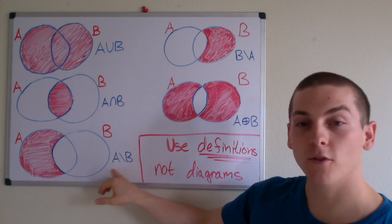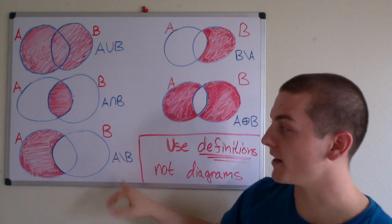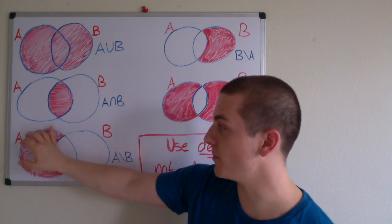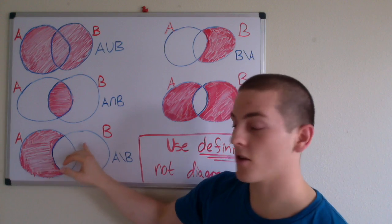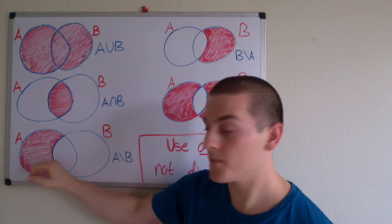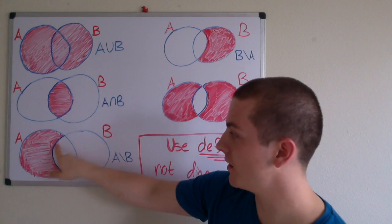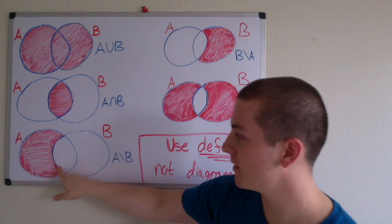The set difference of A and B equals the set containing elements x such that x is an element of A and x is not an element of B, which is why it's just this region here. None of the elements are within B.